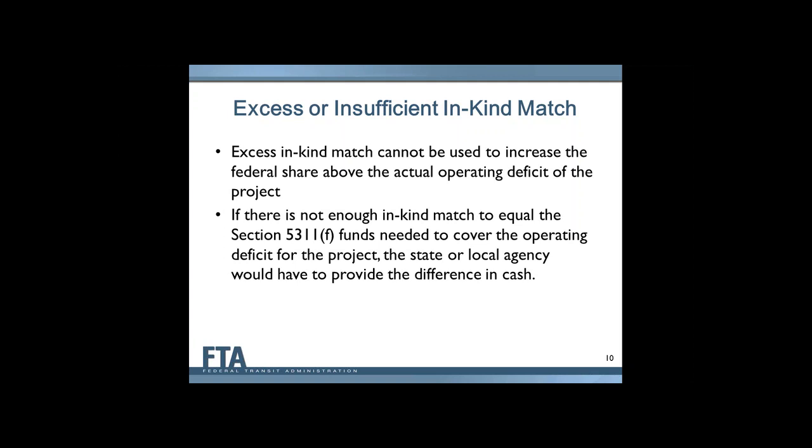Excess in-kind match cannot be used to increase the federal share above the actual operating deficit, so you're limited to the cost of the project. If there is not enough in-kind match, then the state or the local agency would need to come up with the rest of the match. The math has to work out to make it work.